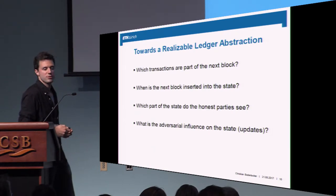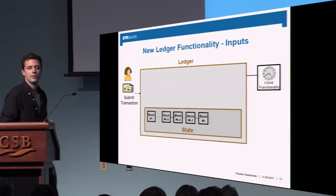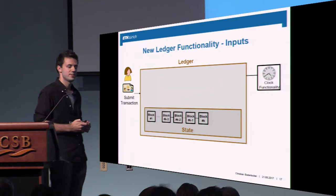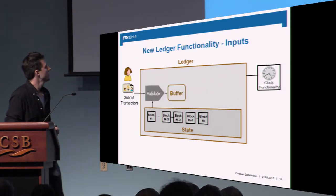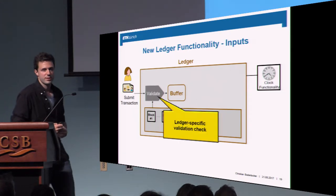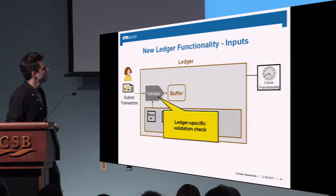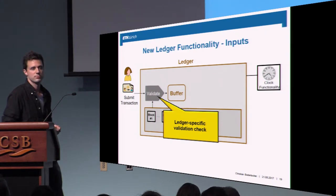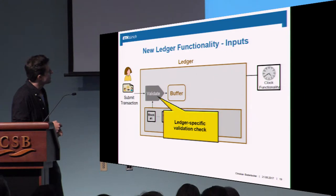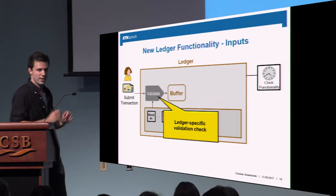Let's start with the description of the ledger functionality defined in our paper. Parties can input values — think of transactions — and they run through a so-called validate predicate and are inserted into a buffer. Here validate is a ledger-specific validation check: does Alice have sufficient funds to transfer money to Bob? Validate gets as input the state of the ledger, the transaction, and decides whether the transaction is valid. If yes, it goes into the buffer and stays there for a while.